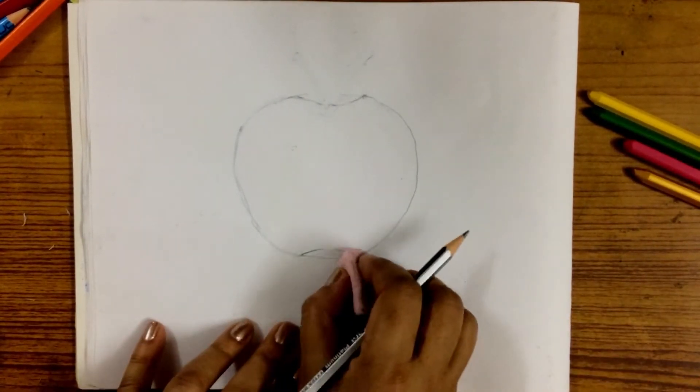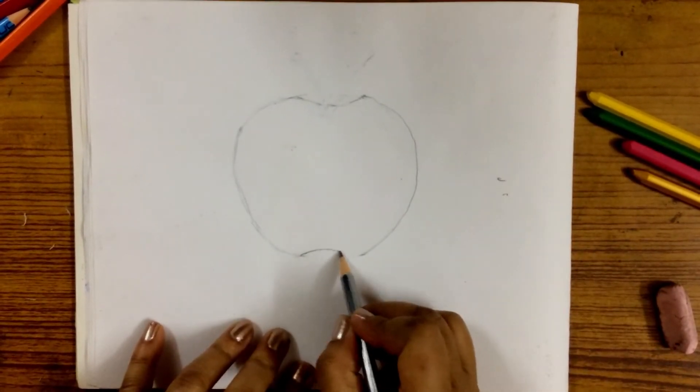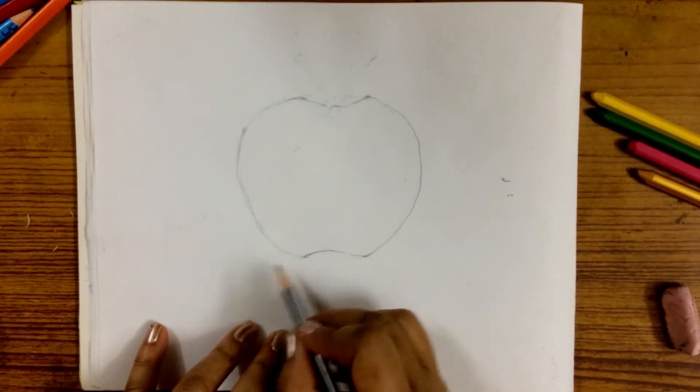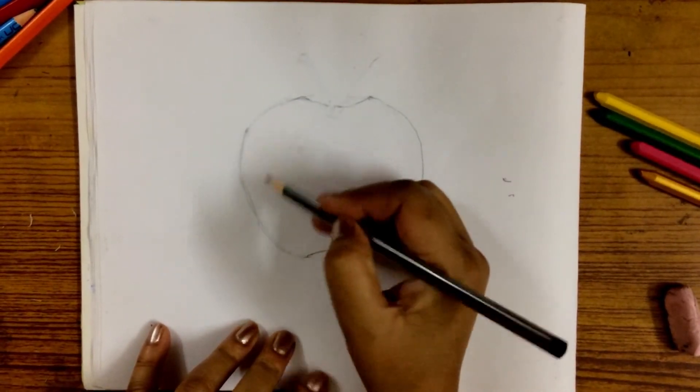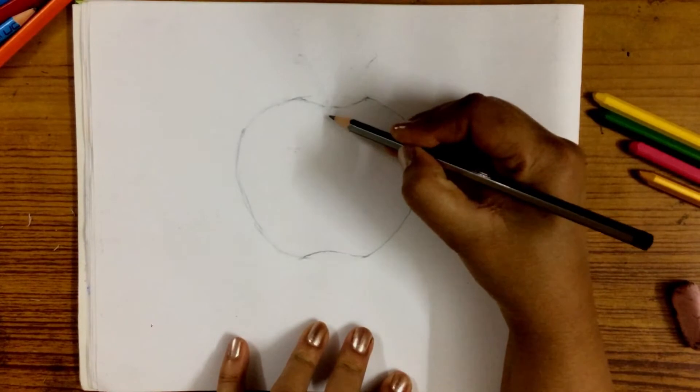And again, we will rub off this extra line which we don't need now. Finally, we will draw its stem.